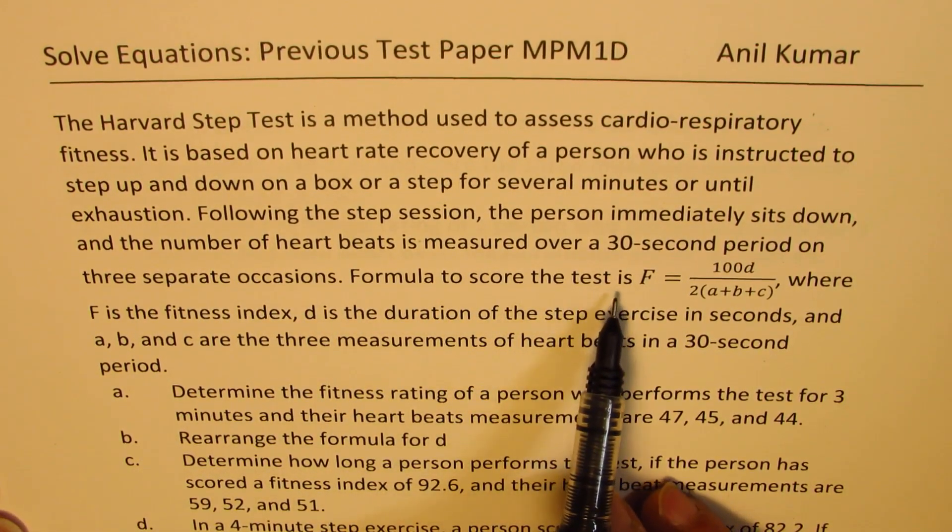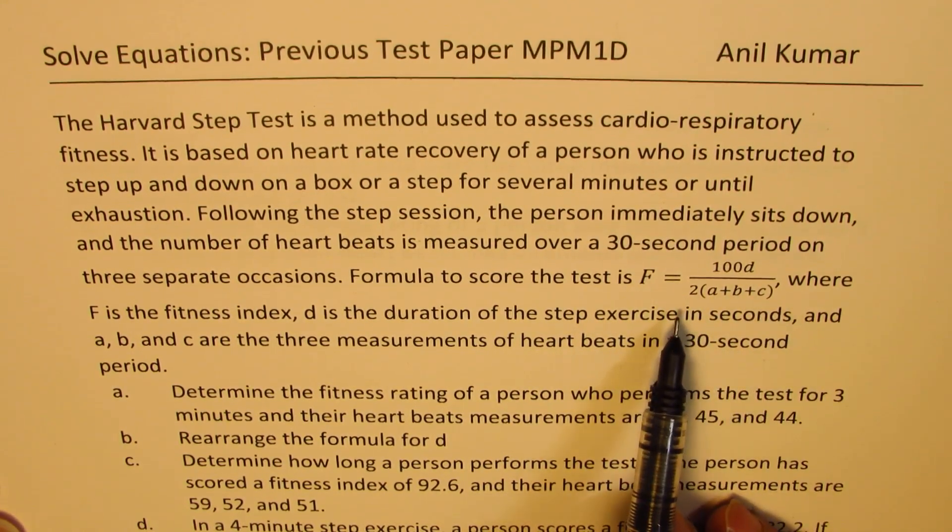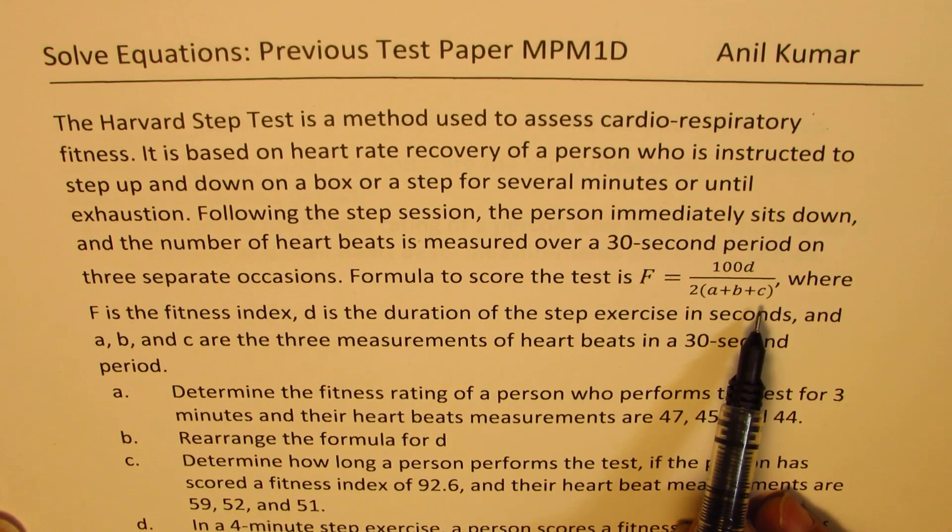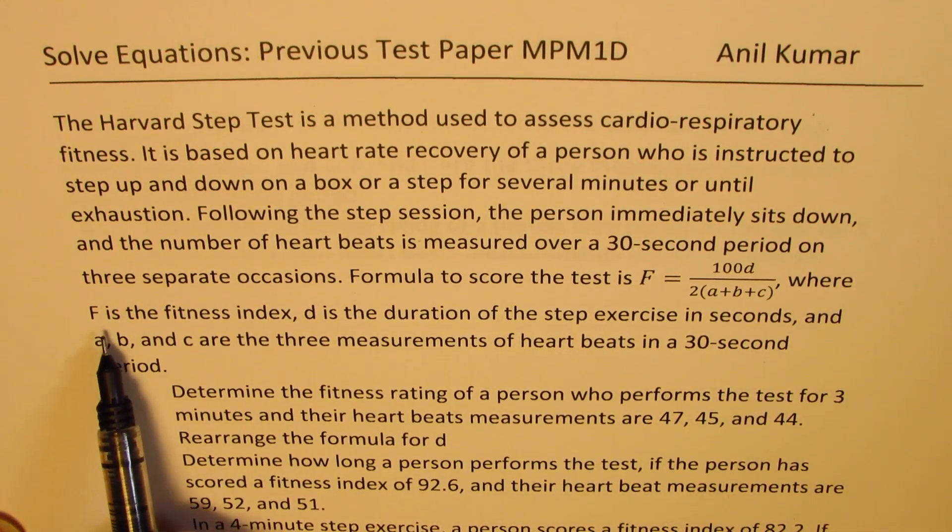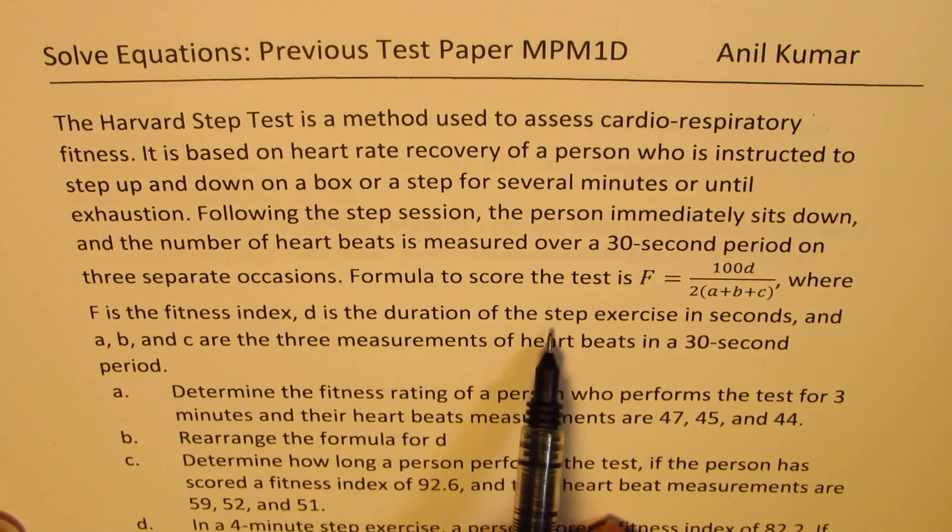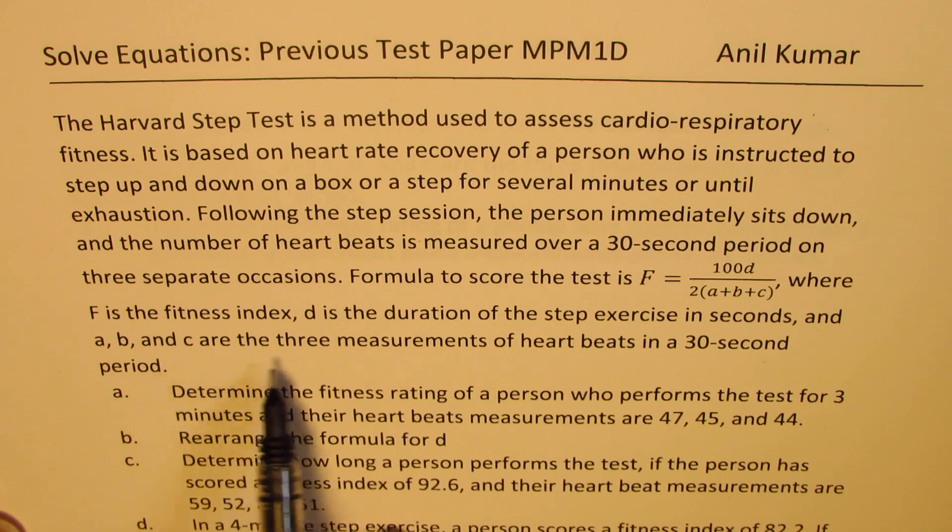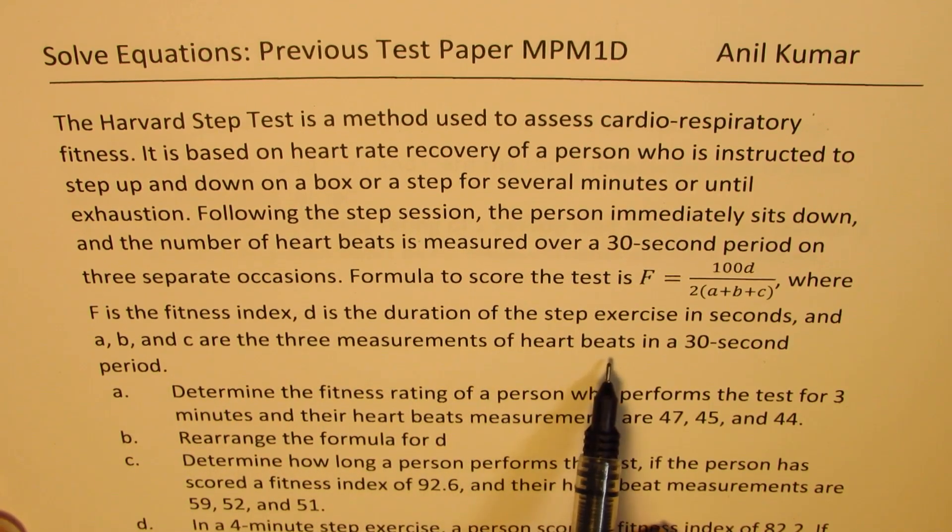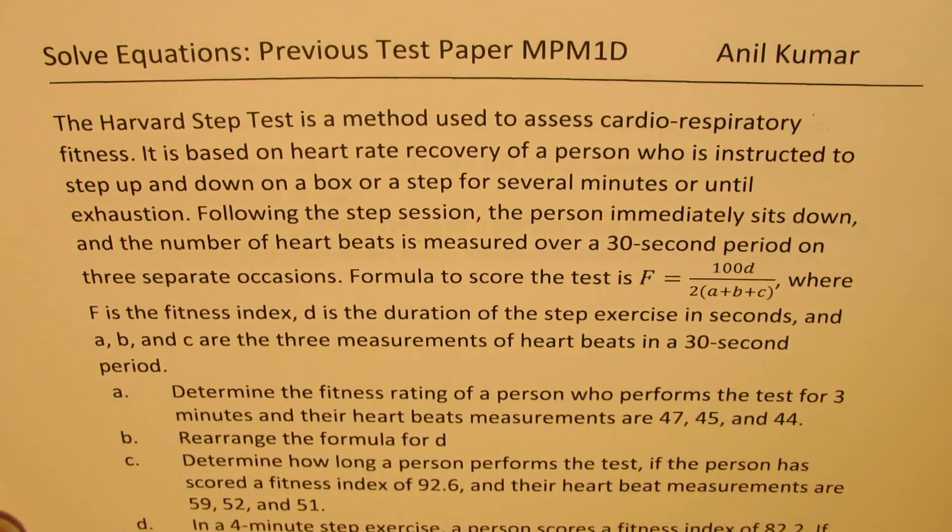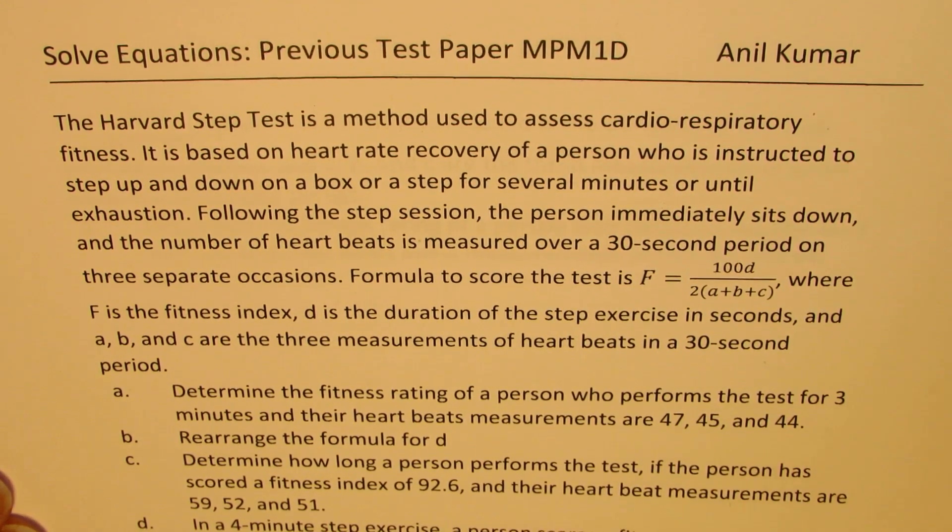Formula to score the test is F equals 100D divided by 2 times (A plus B plus C), where F is the fitness index, D is the duration of step exercise in seconds, and A, B and C are the three measurements of heartbeats in a 30 second period. Now based on this information we have four questions here. We are going to take these questions one by one and answer them.